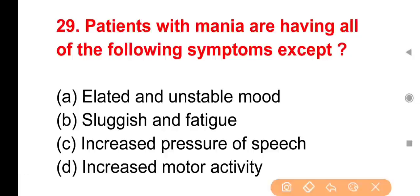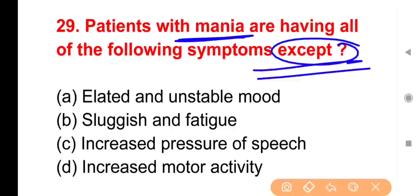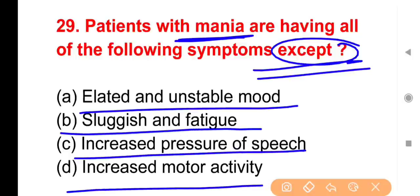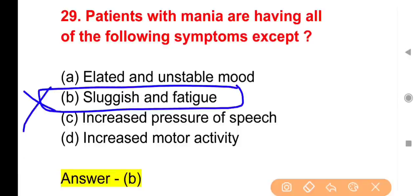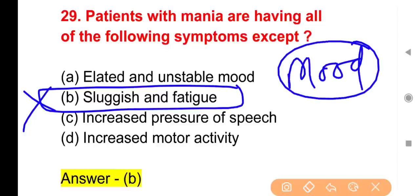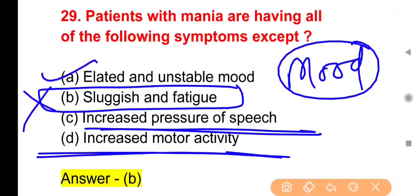Question 29: Patients with mania have all the following symptoms EXCEPT — Option A, Elated and unstable mood; Option B, Sluggish and fatigue; Option C, Increased pressure of speech; Option D, Increased motor activity. The right answer is Option B. In mania, a mood disorder, the patient is hyperactive with elated and unstable mood, increased speech, and increased activity — not sluggish or fatigued.